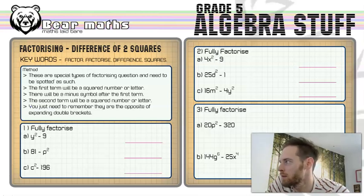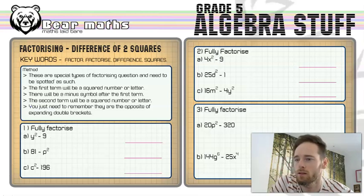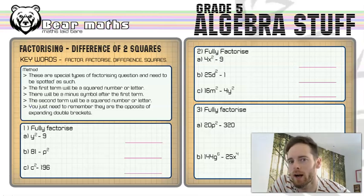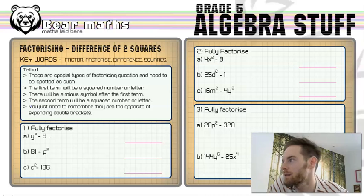So it's a special thing this. The keywords are factor, factorise, difference and squares. A factor is a number that fits into a given number. Factorise means put brackets into an expression. Difference is found by doing one number take away the other number and squares are the result of multiplying numbers by themselves.